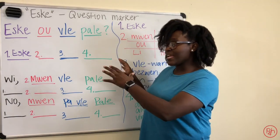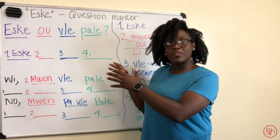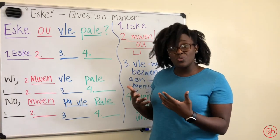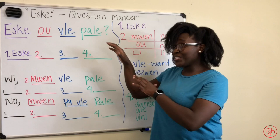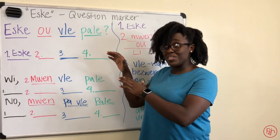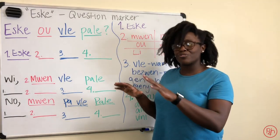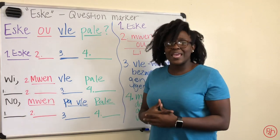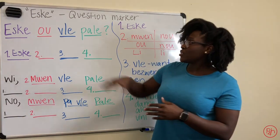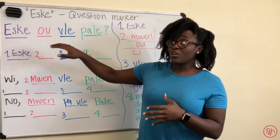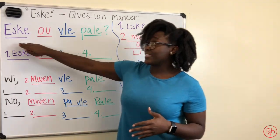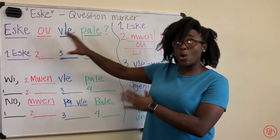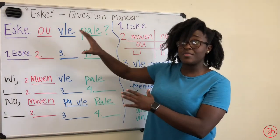So I've created a couple of structures for you to help you easily use the word est-ce que. This isn't the only way that you can use est-ce que, but this is a very user-friendly, easy method. So in this sentence, we start off with est-ce que, and est-ce que is always going to be at the beginning.